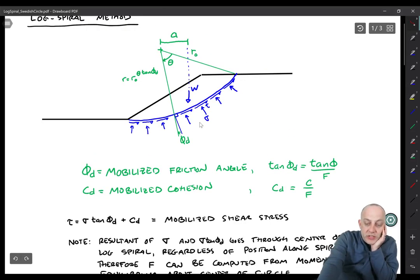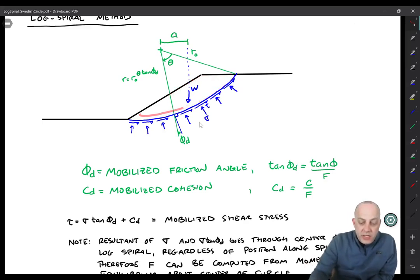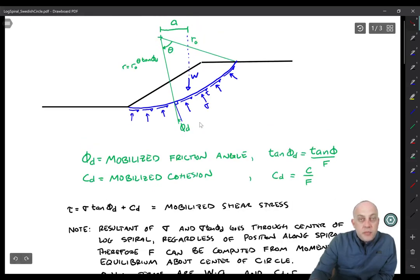Then the driving moment is just solved by finding the weight of this sliding mass and the centroid of the sliding mass and that has a distance a from the center of the spiral. And so we can get the factor of safety based on equilibrium.